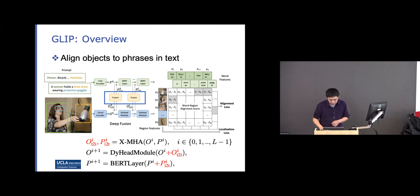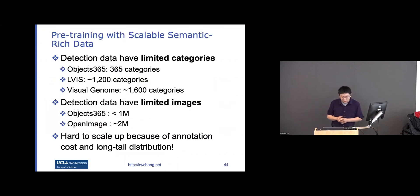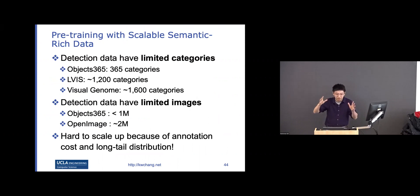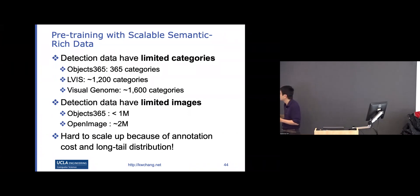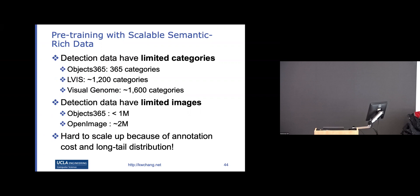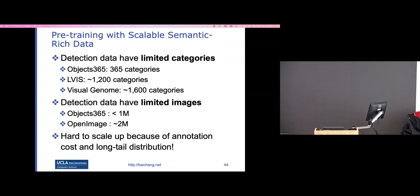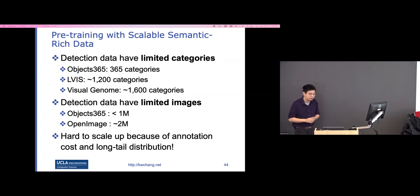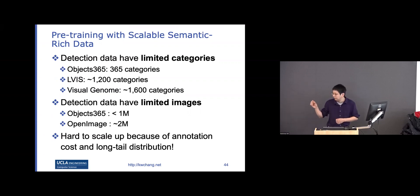There are different types of data we can use. Standard detection data gives an image and you predict from a fixed category set — Object365 has 365 categories, LVIS has around 1,000, and Visual Genome has a large category set. We can convert all this data into a unified prompt format: 'detect the object' and have the model choose the right label.